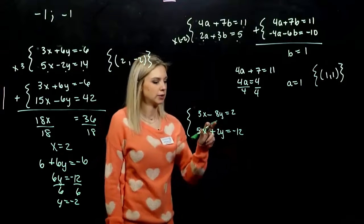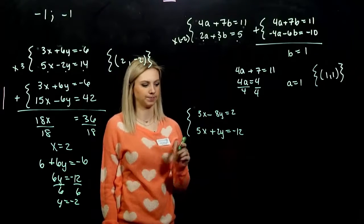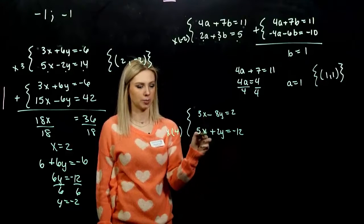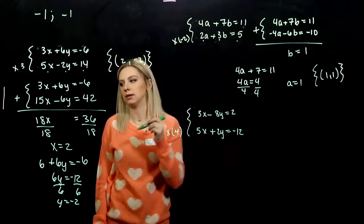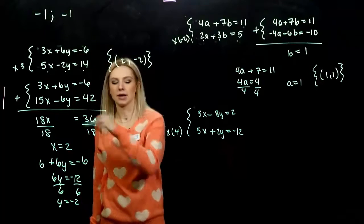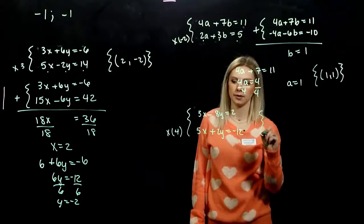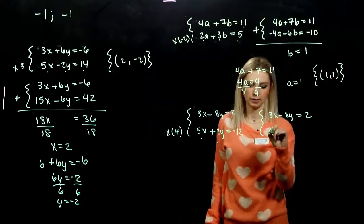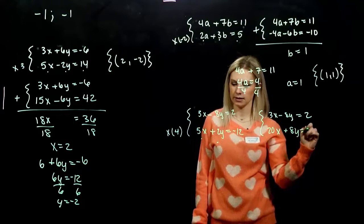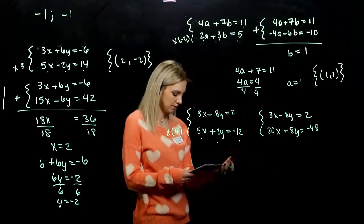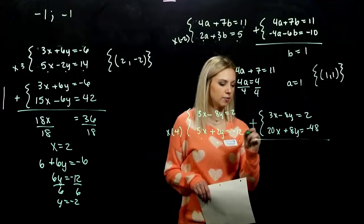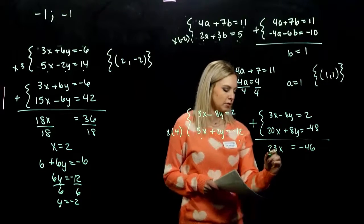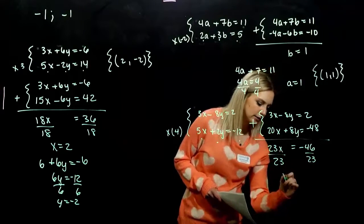For the second one, if we're trying to eliminate Y, what did you alter? Second one by a factor of what? Positive 4. We didn't have to do negative, because they're already opposite signs. In this case, they were the same. In this case, they were already opposites. So, equivalent system. First one didn't change. Second one, every single term by 4. 20X plus 8Y is negative 48. So, if we add those together, my Y's are going to be gone. We've got 23X is equal to negative 46. Divide by 23. X is equal to negative 2.